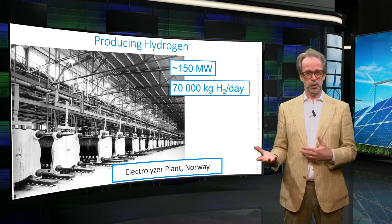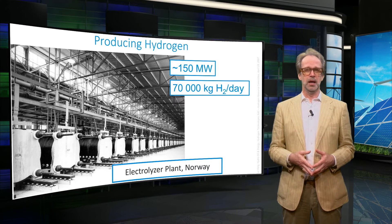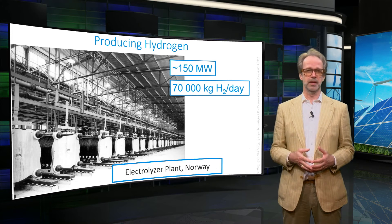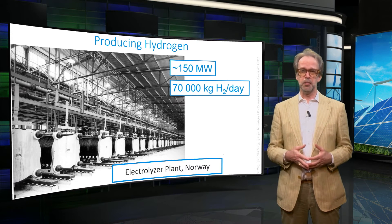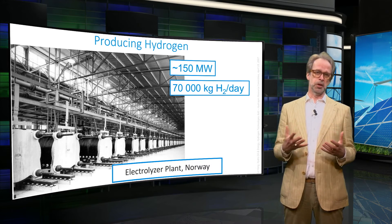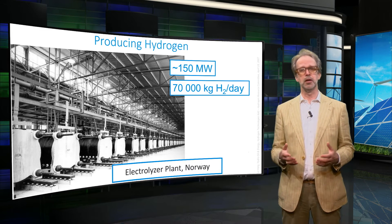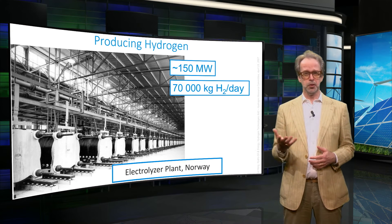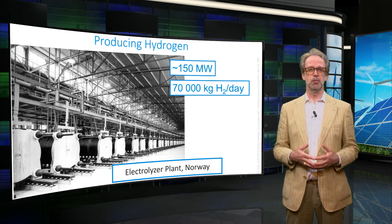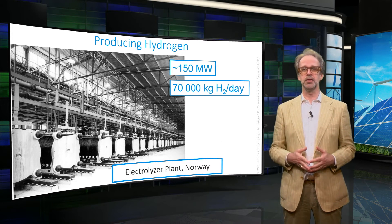Hydrogen, which we use in the fuel cell, is not a resource — we cannot mine it like a fossil fuel. Hence we have to consider how to make hydrogen from sustainable sources. Hydrogen can be made in many different ways; however, the most straightforward way to produce hydrogen is from electrolysis. Electrolysis is a pretty old but reliable technology. For instance, this electrolyser plant was already operated in 1948 and produced hydrogen on a large scale.